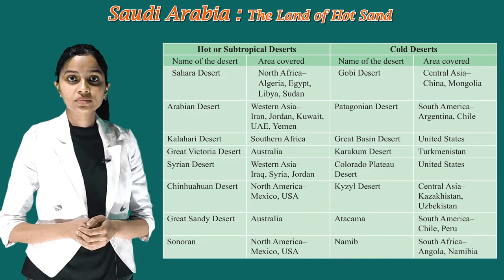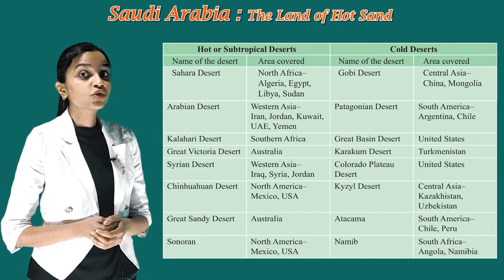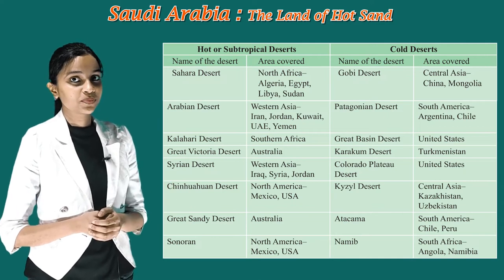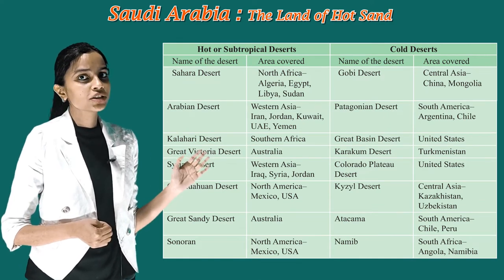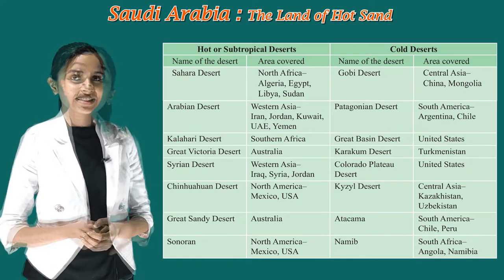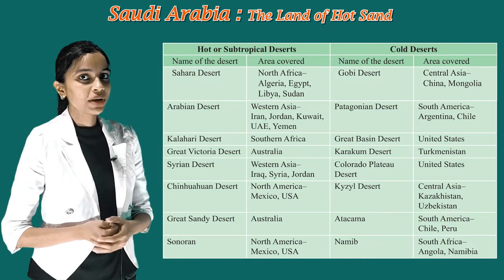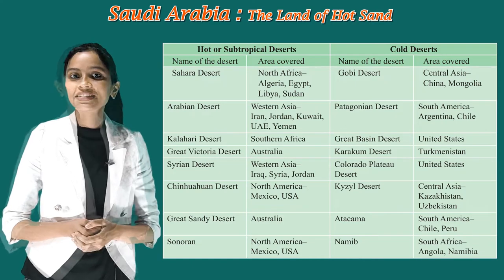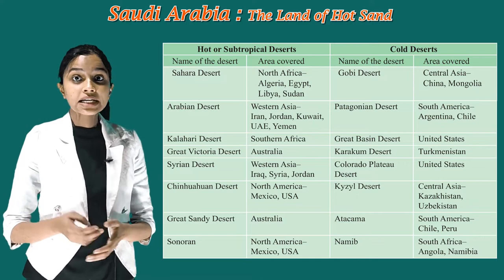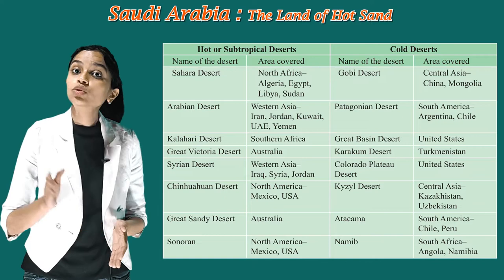Now children, we are moving towards the cold deserts. Gobi Desert is in Central Asia — China and Mongolia. Patagonian Desert is in South America — Argentina and Chile. Great Basin Desert is in the United States. Karakum Desert and Kizilkum Desert are in Central Asia — Kazakhstan and Uzbekistan. Atacama Desert is in South America — Chile and Peru.